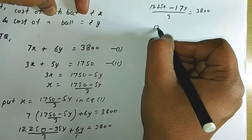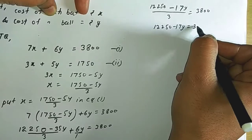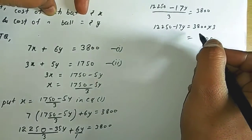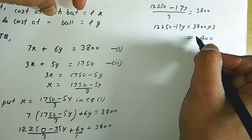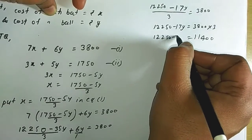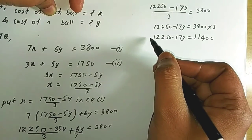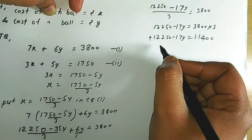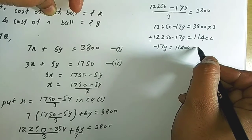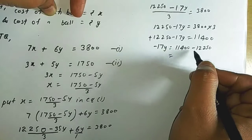Multiplying both sides by 3: 12250 − 17y = 11400. So 12250 − 17y = 11400, which gives 12250 − 11400 = 17y, so 850 = 17y, therefore y = 850 / 17 = 50.